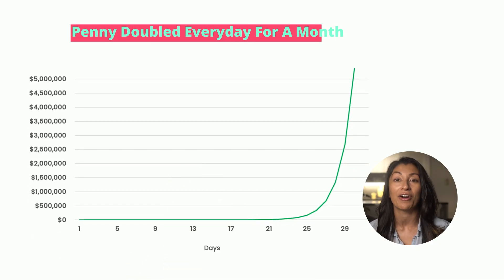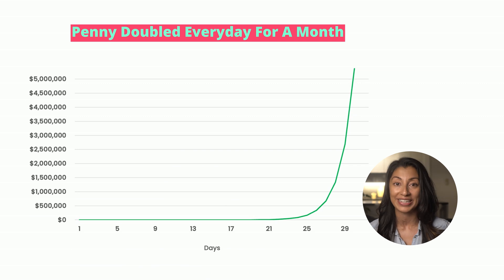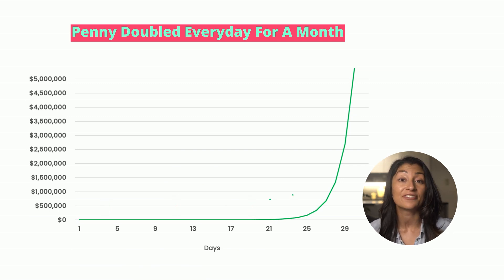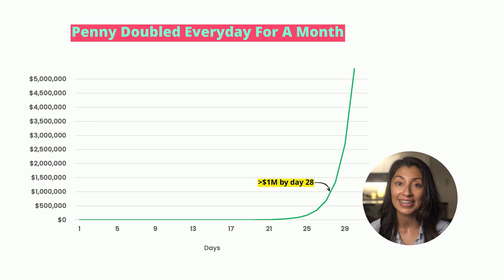Don't believe me? Pause the video, get a calculator, and see for yourself. If we put this into a graph, it once again demonstrates the incredible power of compounding. Growth starts off slow and then gets faster and faster until it starts growing rapidly, surpassing $1 million on day 28 and reaching over $5 million by the end of day 30. So by choosing a penny doubled every day, you would end up with significantly more than $1 million.